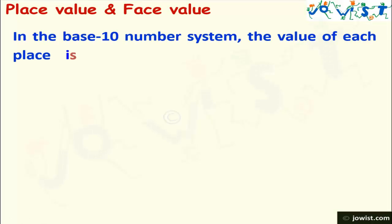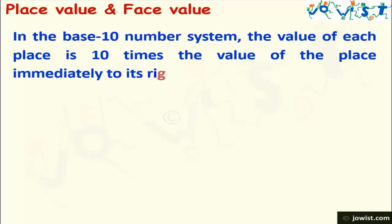In the base 10 number system, the value of each place is 10 times the value of the place immediately to its right. We take an example 123. Here 3 is in the ones place, 2 is in the tens place, and 1 is in the hundreds place.